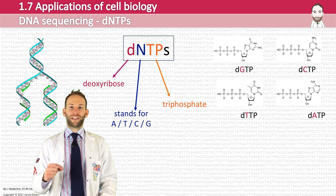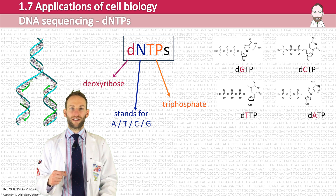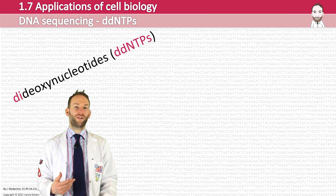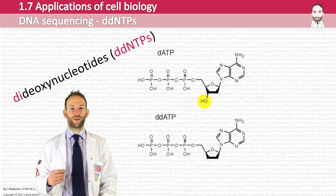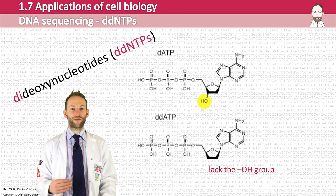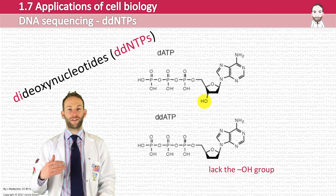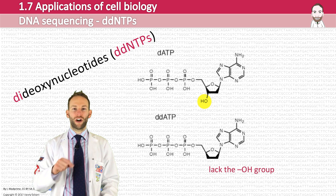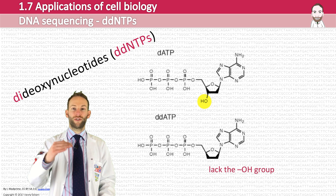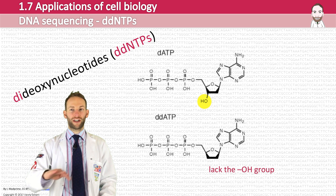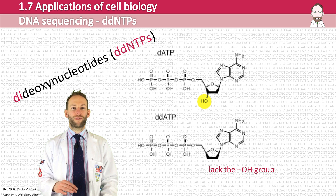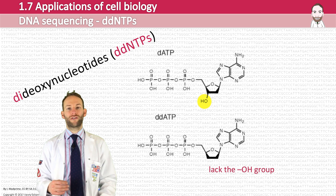The second set of molecules are called dideoxynucleotides, or DDNTPs. These are the same as the mononucleotides we just looked at, but they lack the OH group on carbon three of deoxyribose. Therefore, they cannot bind to the next phosphate group on the following nucleotide, as no phosphodiester bond can form. This terminates the strand if one of those nucleotides is added during PCR.